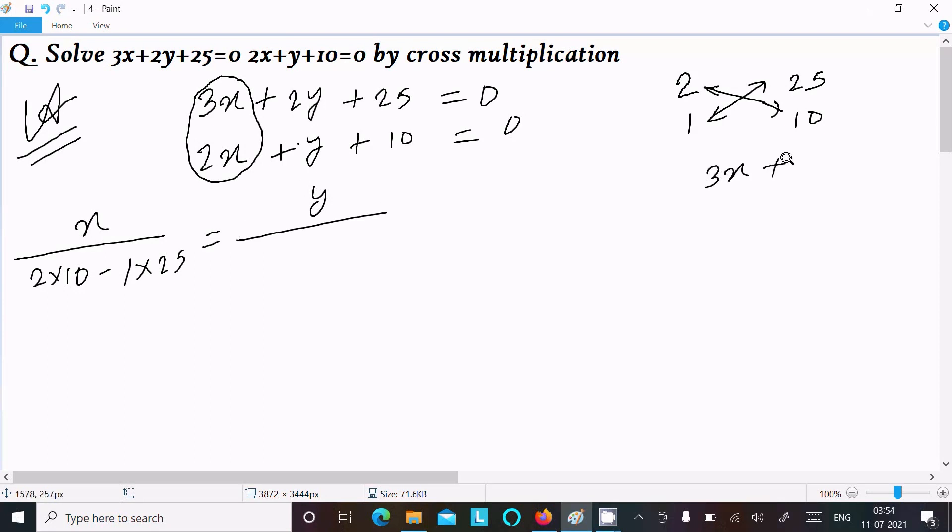Now for y calculation, hide the term of y. On the y, the next is 25, so writing here 25, 10 here. 3 is the x coefficient and 2. Do the cross multiplication.